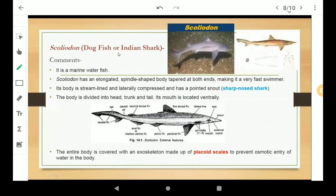So this was all about Labeo rohita. Now we will be talking about Scolidon which is also known as dogfish or Indian shark. It is a marine water fish. Scolidon has an elongated spindle shaped body. The body is tapered at both ends making it a very fast swimmer. It is elongated and spindle shaped.